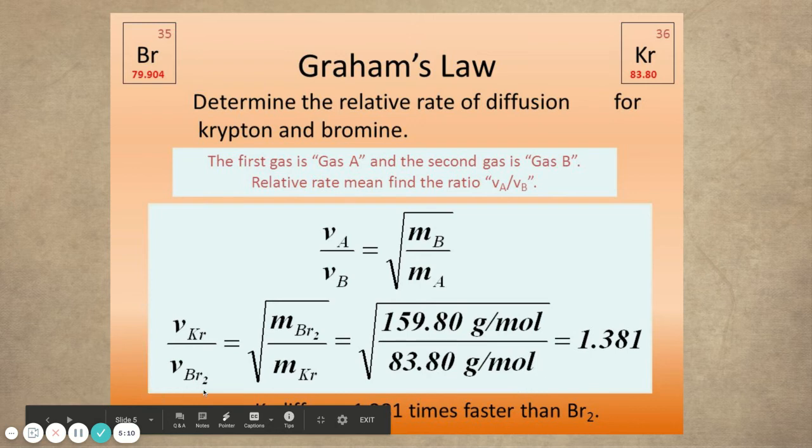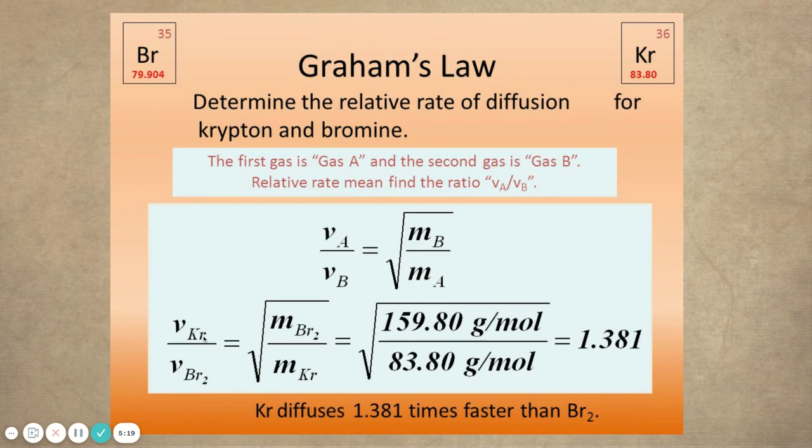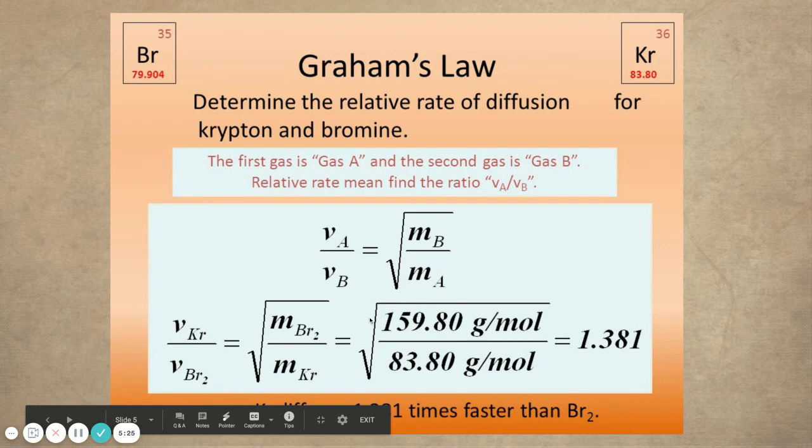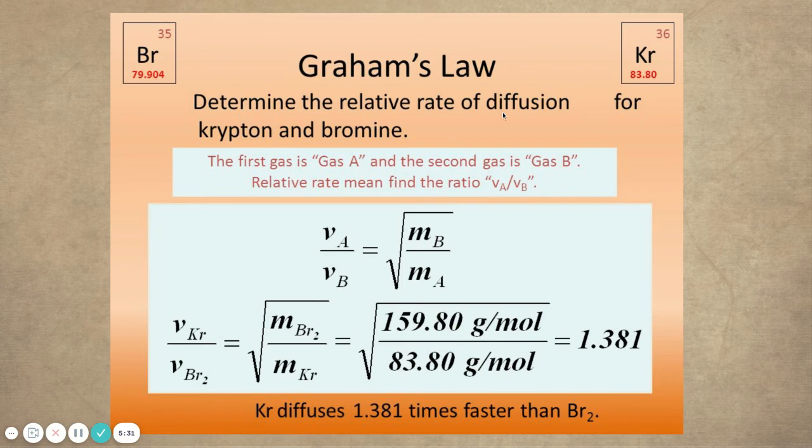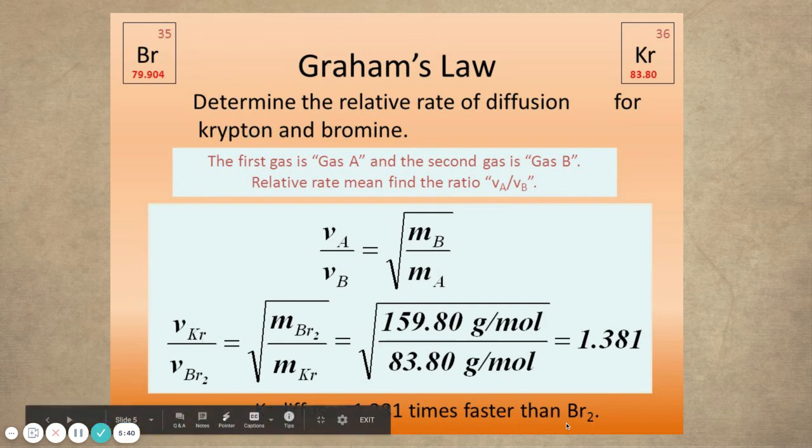If you were to say it the other way, you would say bromine is one and a half times slower than krypton. It doesn't really matter which one goes on the top or the bottom, as long as they're opposites here, and as long as you're stating it correctly based on what it said in the question. We put krypton on the top and then it's diffusing that many times faster.